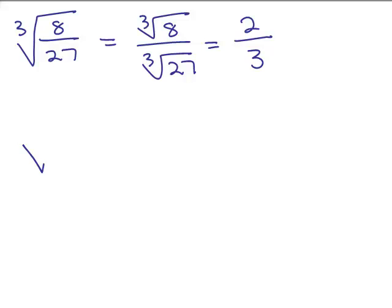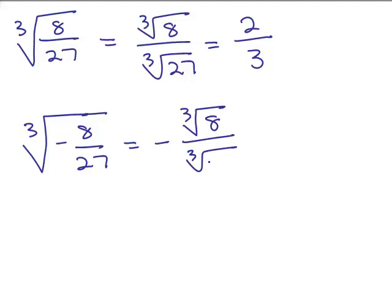Now, what if you had the cube root of negative 8/27? Remember, you could bring your minus sign out to the front and then you could have the cube root of 8 over the cube root of 27 and we'll get negative 2/3.